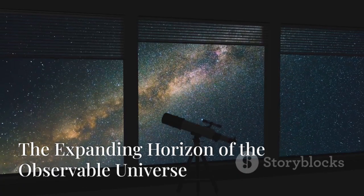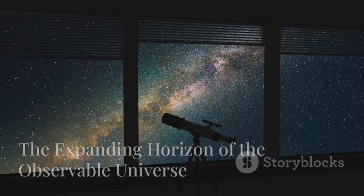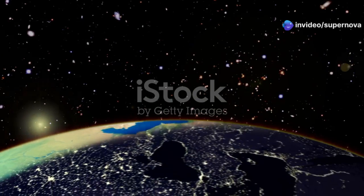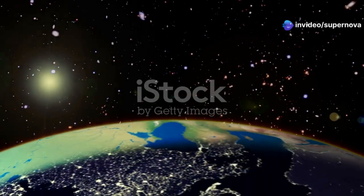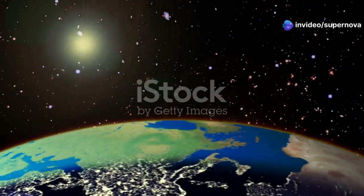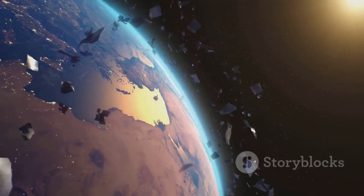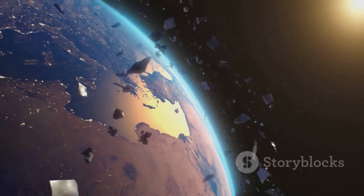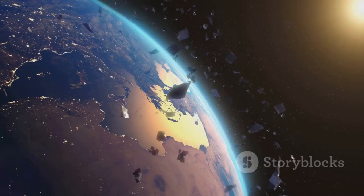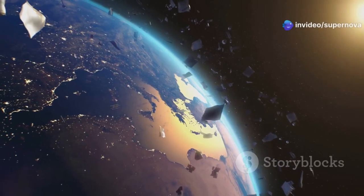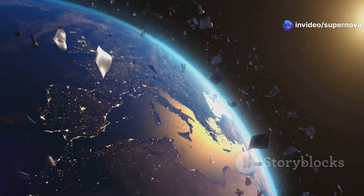The expanding horizon of the observable universe. The observable universe is everything we can see from Earth, limited by the speed of light and the age of the universe. This means that the light from the farthest objects we can see has taken billions of years to reach us. As we look deeper into space, we are essentially looking back in time, observing the universe as it was billions of years ago.